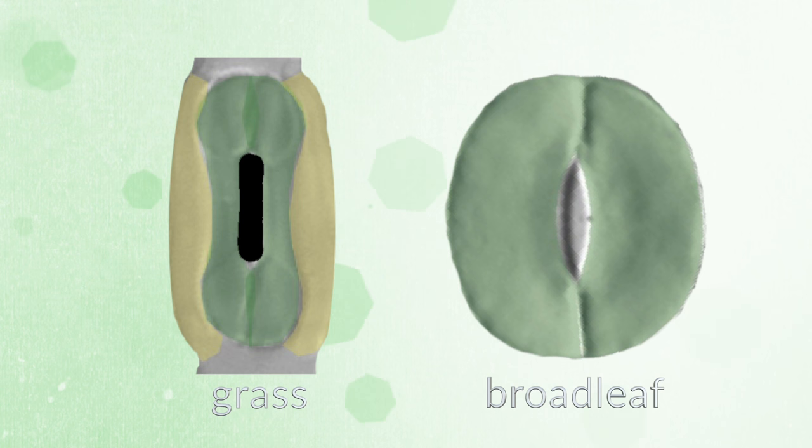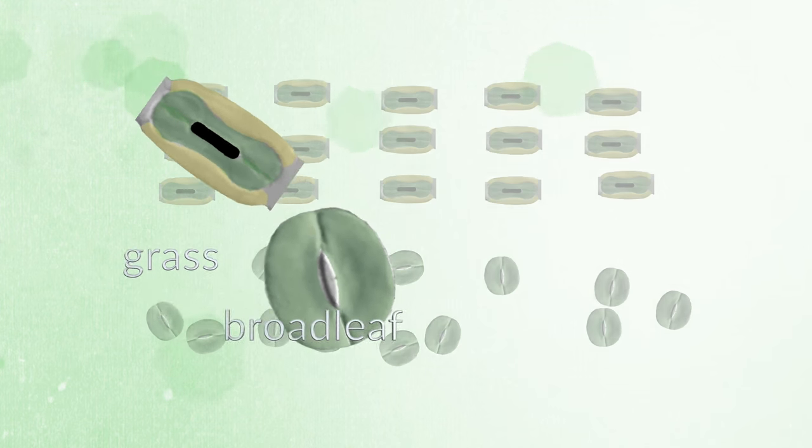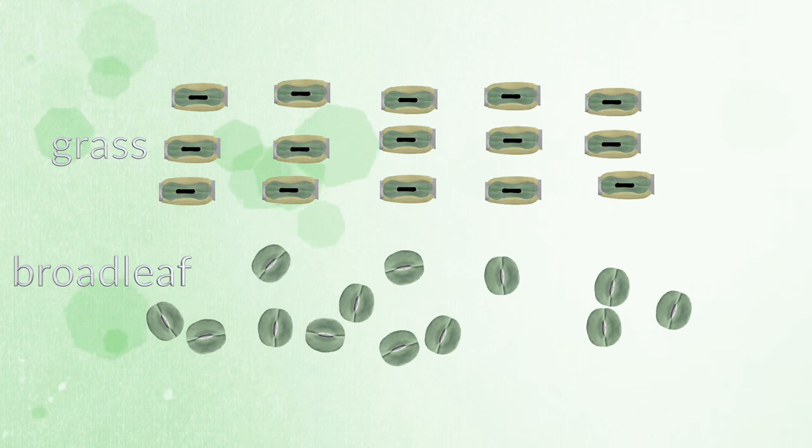Grass stomata have a dumbbell shape instead of the kidney shape found in most plants. Further, grasses have their stomata aligned in rows along the leaf blade, as opposed to the more haphazard distribution on broadleaf plants. Some scientists have speculated that the shape and distribution of stomata in grasses are the reason for their tremendous evolutionary success.